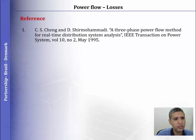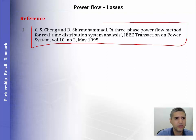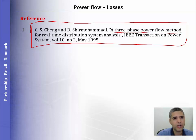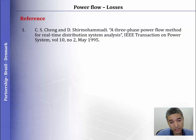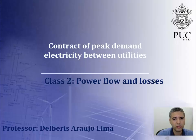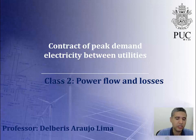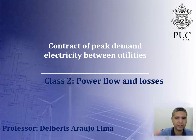The reference for this class is a paper you can find by searching 'three-phase power flow method for real-time distribution system analysis,' published in IEEE Transactions on Power Systems. You will find more details about this method there. This method will be used in our activity in October. In the next class, I will present the same method with numbers, which in my opinion is an easier way to understand the method. See you in the next class. Bye.